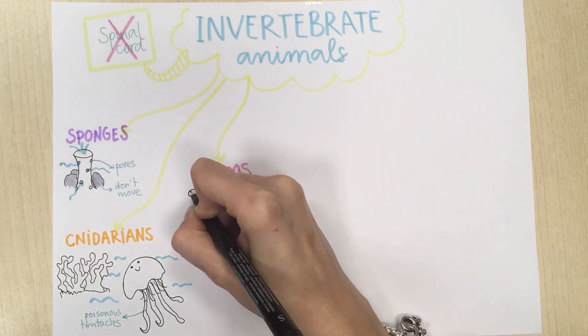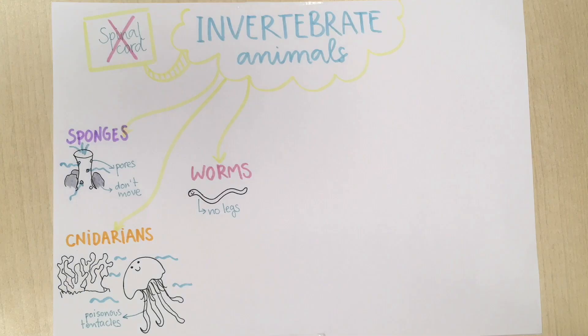Worms are the third group. They have long bodies with no legs and they can be both aquatic or terrestrial.